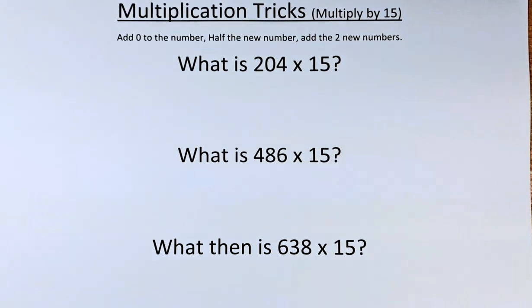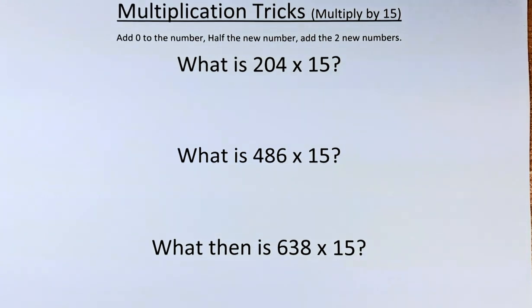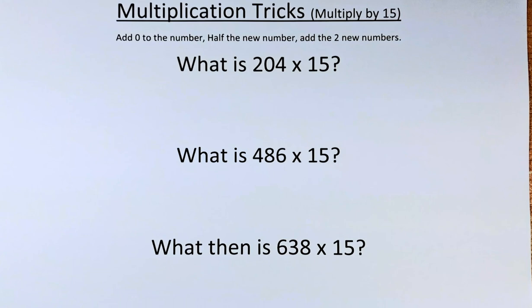Good day! This is a multiplication trick when you multiply any number by 15. The trick is: you add 0 to the number, half the new number, and then add the two numbers together.